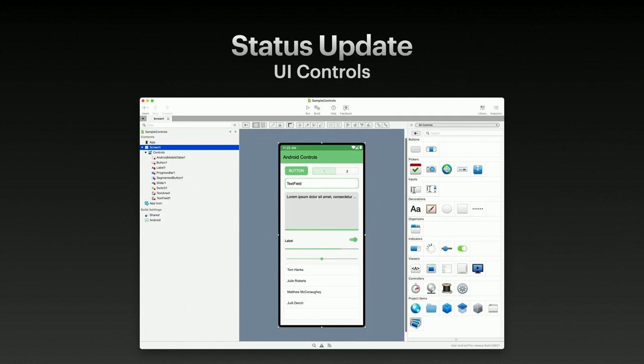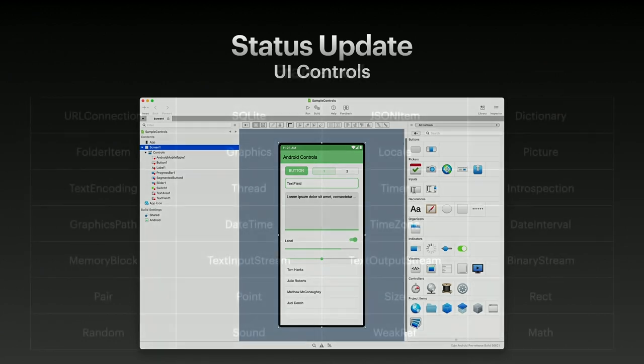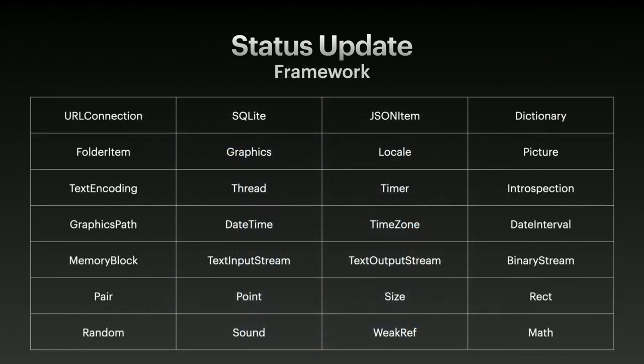With UI controls, the controls are all drag and drop. Control locking and their position are changeable in code, just like the other platforms. We've added and fixed numerous methods and properties on these controls since the last XDC. This table lists some of the common framework classes available to Android projects, and there are even more than are listed here. We have system device and version data, URL, B64, hex encoding methods, and we've added and updated even more of these since the last XDC.